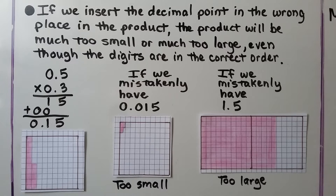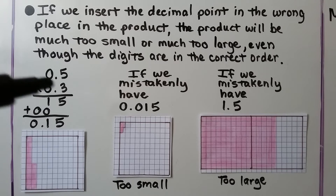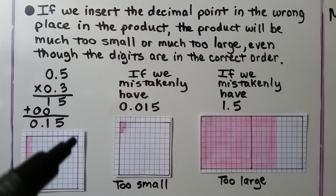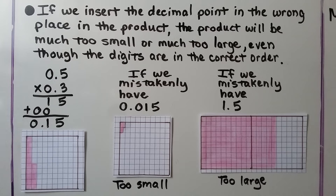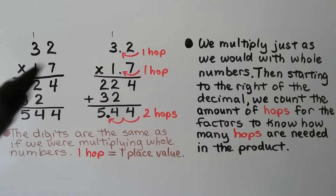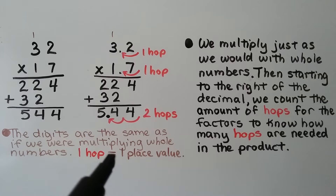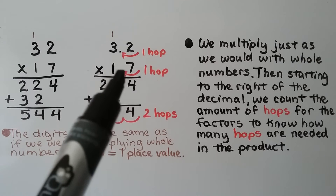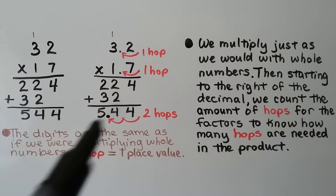So it's very important to insert the decimal point in the correct place. You need to count decimal place value hops in the factors to get the total number of hops. There are two hops here, so there's going to be two hops in the product: 1, 2. We multiply just as we would with whole numbers, then starting from the right, we count the amount of hops in the factors to know how many hops are needed in the product. One hop equals one place value. We have 1, 2 in the factors — so 1, 2 in the product.